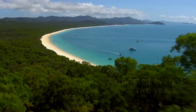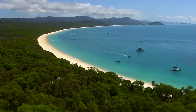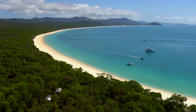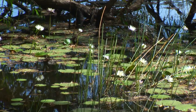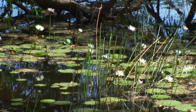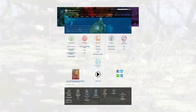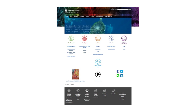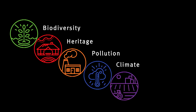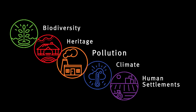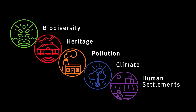This is the seventh report for Queensland and the second to be published in a web-based format. It's a snapshot of the current state of Queensland's environment, compiled as an interactive web-based product based around five major themes – biodiversity, heritage, pollution, climate and human settlements. To provide the comprehensive level of reporting required, each of these themes is divided into sub-themes.